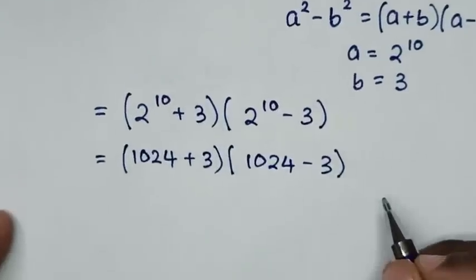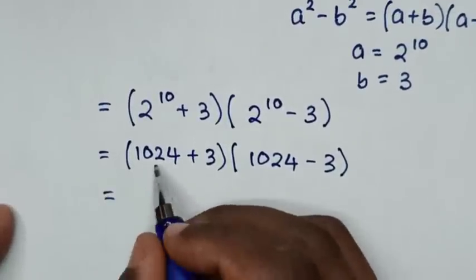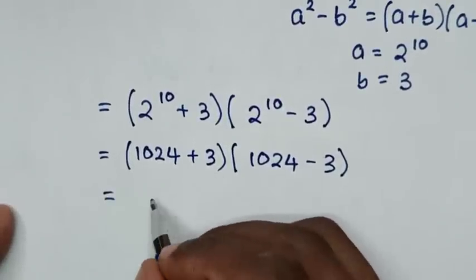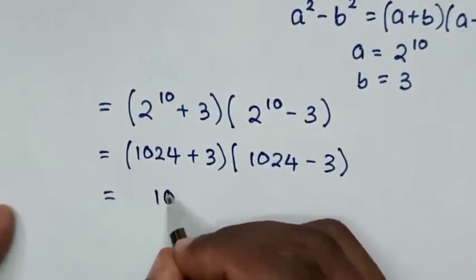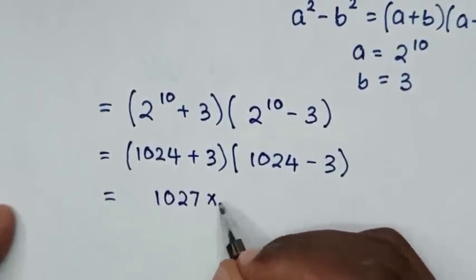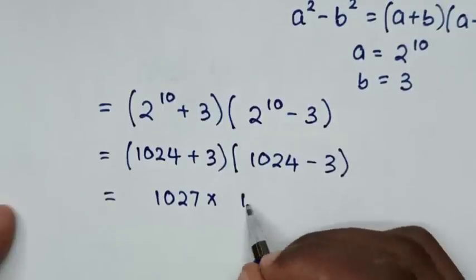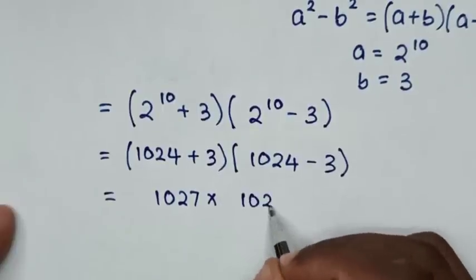Then in the next step, it will be equal to 1024 plus 3 is 1027, times 1024 minus 3 is 1021.